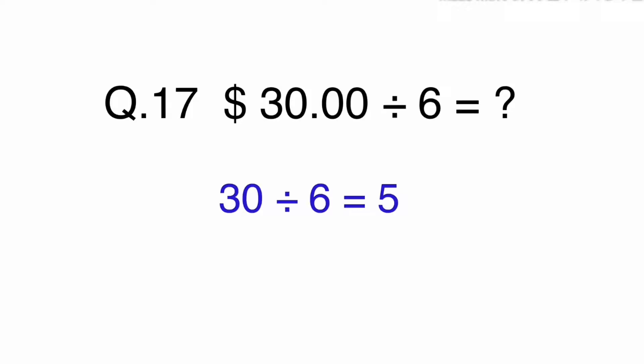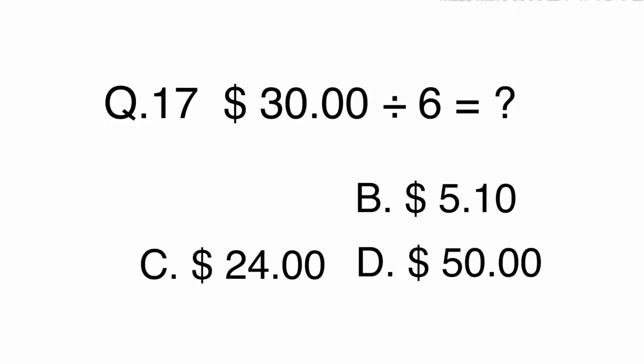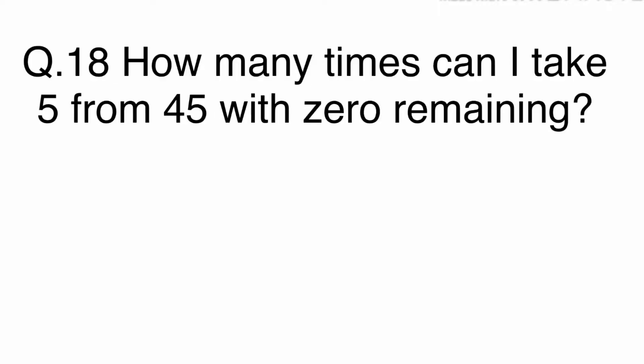30 divided by 6 equals 5. To check the answer you can do 5 times 6 which equals 30. The answer is A. $5.